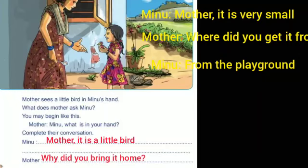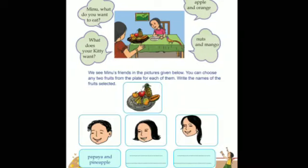Now Activity Number Four: Mother gives some fruits to Minu and Kitty. Mother asks Minu what she wants to eat. Minu wants apple and orange. What does Kitty want? Kitty wants nuts and mango. Now look at the pictures of Minu's three friends.